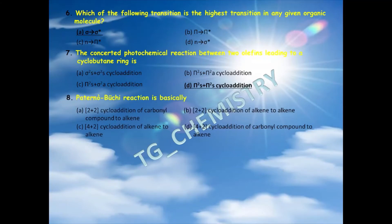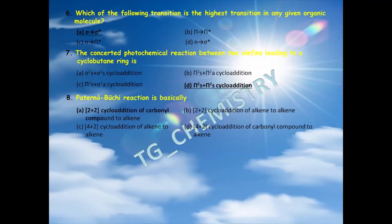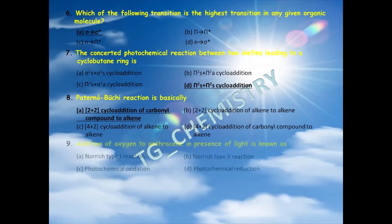Seventh question: the Paterno-Büchi reaction is basically — option A) 2+2 cycloaddition of a carbonyl compound to an alkene, B) 2+2 cycloaddition of alkene to alkene, C) 4+2 cycloaddition of alkene to alkene, D) 4+2 cycloaddition of carbonyl compound to alkene. The Paterno-Büchi reaction is a 2+2 cycloaddition of a carbonyl compound to an alkene, so option A is correct.